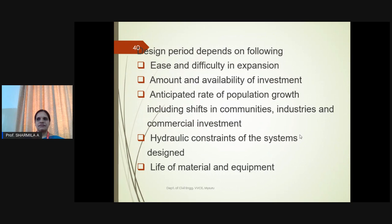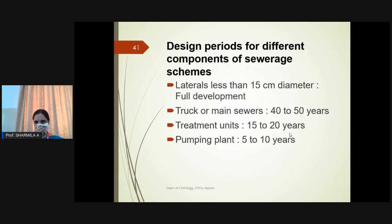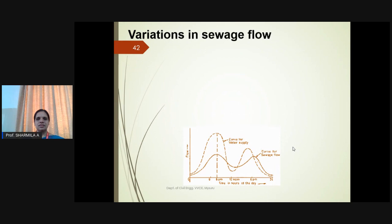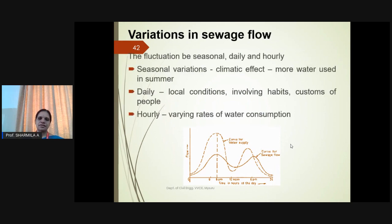For future periods, provision has to be made in the design capacity of various components — known as design periods. Design periods vary depending on the activity: ease and difficulty of expansion, amount and availability of investment, anticipated rate of population growth, hydraulic constraints of the sewer system, and life of material and equipment. Design period for different components: laterals less than 15 cm diameter — full development; trunk or main sewers — 40 to 50 years; treatment units — 15 to 20 years; pumping plant — 5 to 10 years.